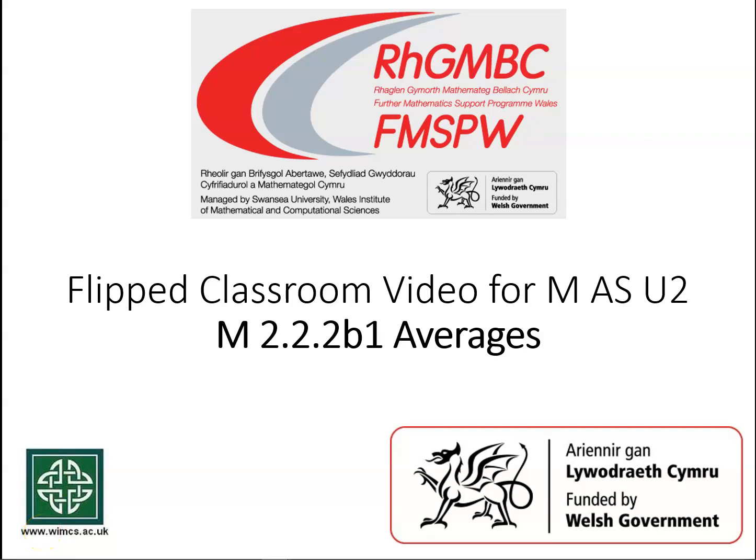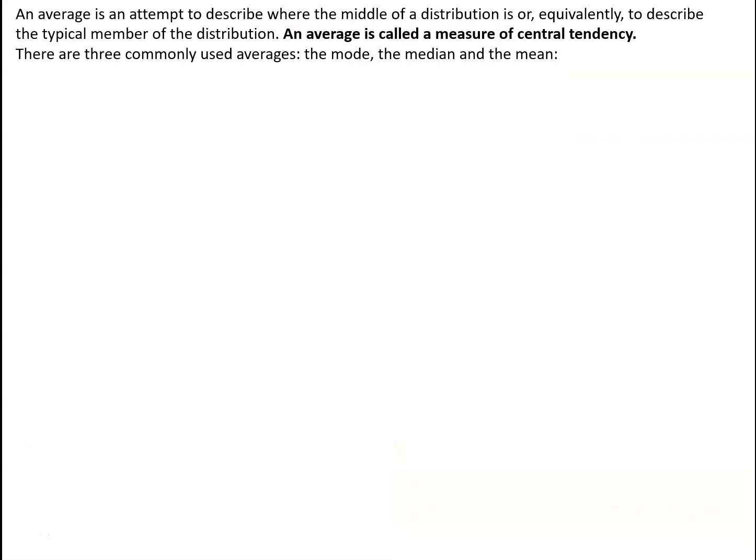In this video, we're going to look at the averages that we can calculate for statistical data. An average is an attempt to describe where the middle of a set of statistical data is, or equivalently to describe what a typical member of the data is. An average is frequently called a measure of central tendency, and at GCSE you'll certainly have met three commonly used averages: the mode, the median, and the mean.